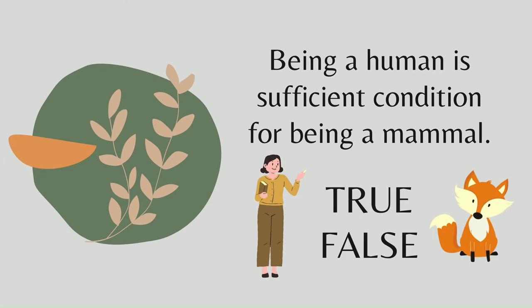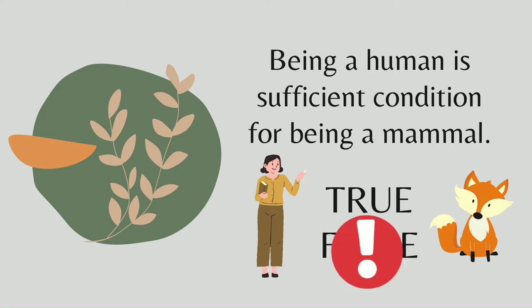Next, same subject: Being a human is a sufficient condition of being a mammal. Is this true or false? It is true. Being a human is enough to be called a mammal — if you are human, you can be called a mammal. So it is true.